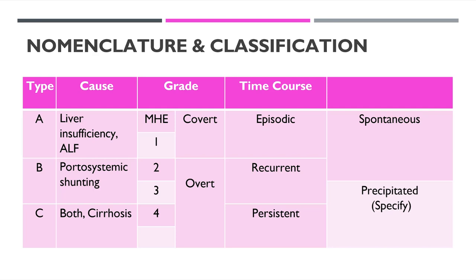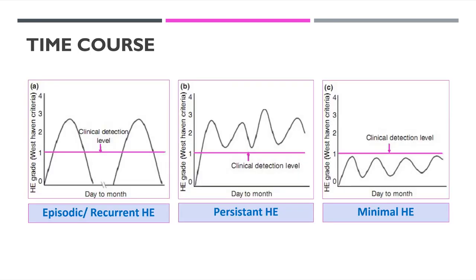Looking at episodic versus recurrent versus persistent versus minimal: in episodic HE, there is clinical alteration in sensorium which eventually returns to normal. If episodes occur more than once within six months, we call it recurrent; otherwise it is episodic. In persistent HE, the clinical manifestation of altered sensorium never returns to normal.